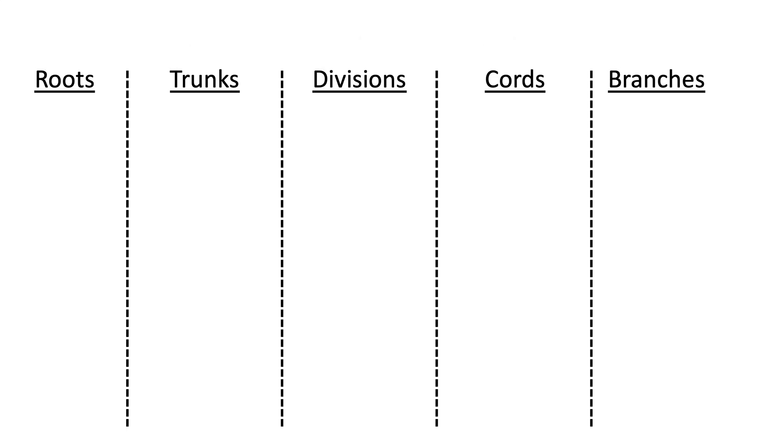The next thing we'll want to know is the number of segments in each of these sections. For the roots there's five, for the trunks there's three, for the divisions there's six, for the cords there's three, and for the branches there's five. So usually what I'll say to myself is five, three, six, three, five to remember that sequence.